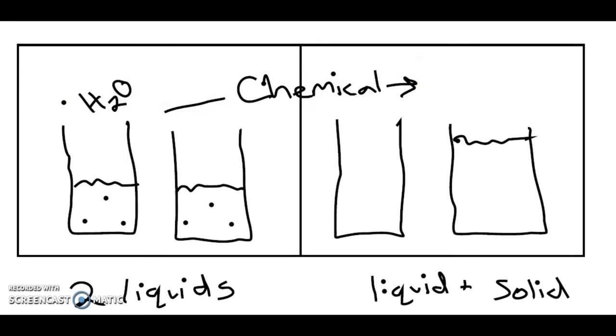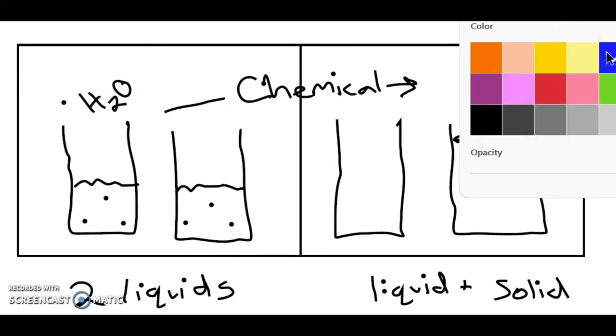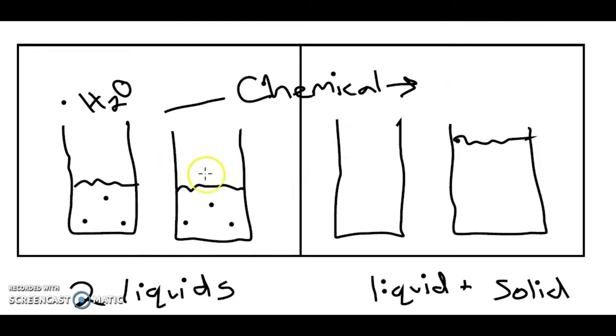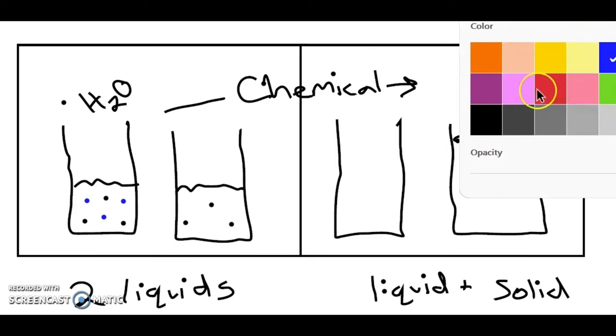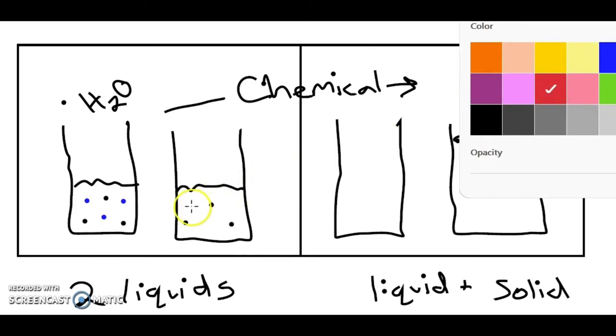Okay, and now we're going to change our color. We're going to have our two different chemicals. So over here we're going to have chemical A, and we're going to represent it with some blue compounds here. And then over here we're going to have chemical B, and we're going to represent it with some red dots here.